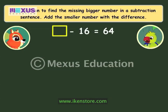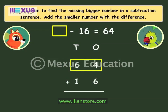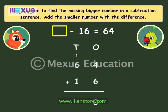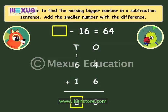Now look at this subtraction statement — the bigger number is missing here. We use addition to find the missing bigger number in a subtraction sentence. We add the smaller number with the difference. Go on, find the missing number, Amber. We need to add 64 and 16. 6 plus 4 is 10 — we write 0 in the ones column and carry over 1 to the tens column. 6 plus 1 plus 1 is 8, so we write 8 in the tens column. The missing number is 80.